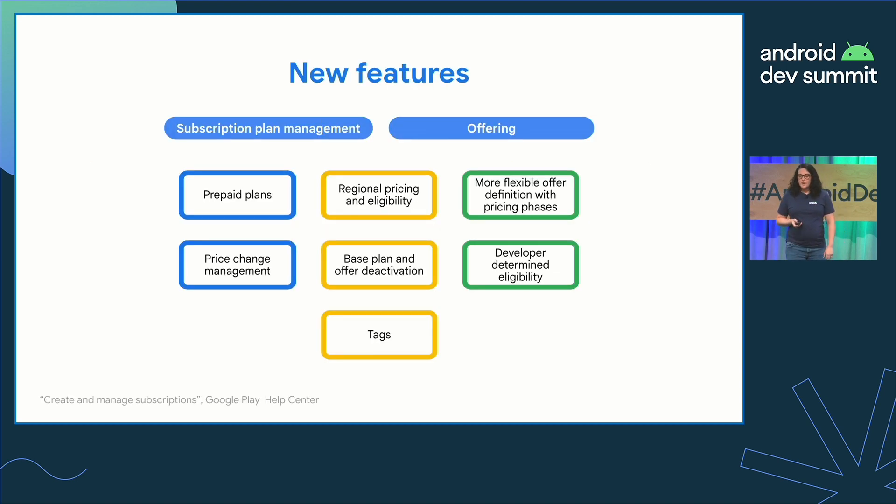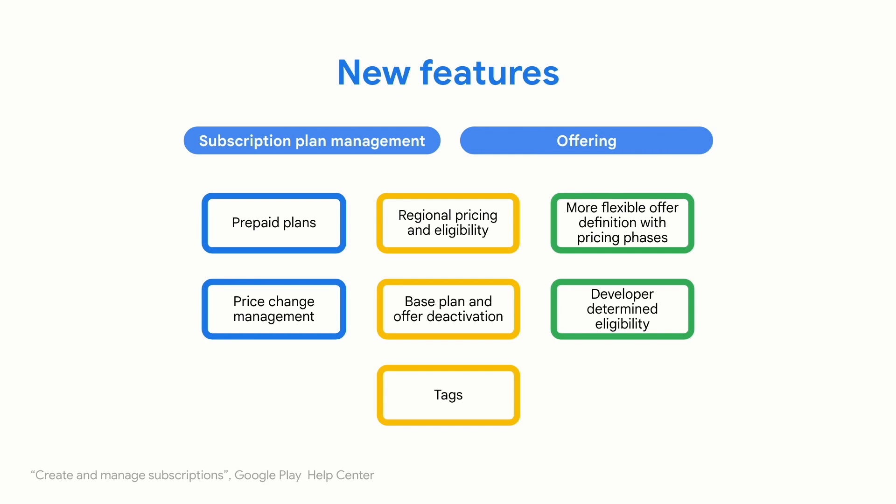For the new features, there are new ways of selling subscription plans like prepaid plans, and with price change management and pricing cohorts, you're in control of when your existing subscribers get a new price when you need to update pricing. There are new offering capabilities, for example, pricing phases for easier and more flexible offer definition, and also easier offer eligibility control. There's also base plan and offer deactivation, which allows you to activate or deactivate what subscription products are available for purchase in your app. Along with tags, this gives you a flexible way of managing your subscriptions catalog without having to make many code changes.